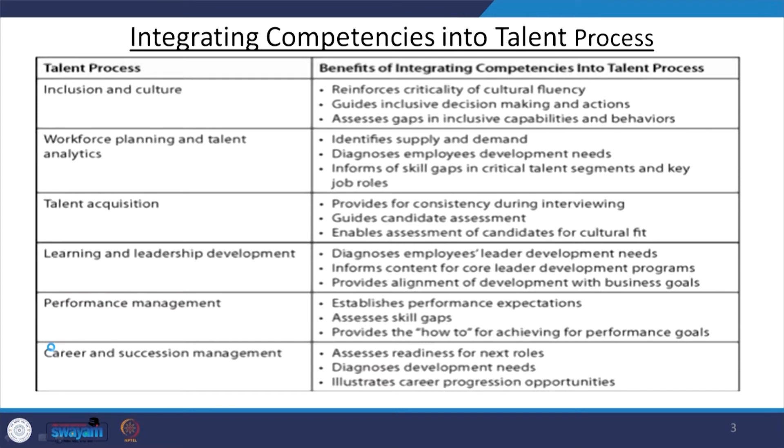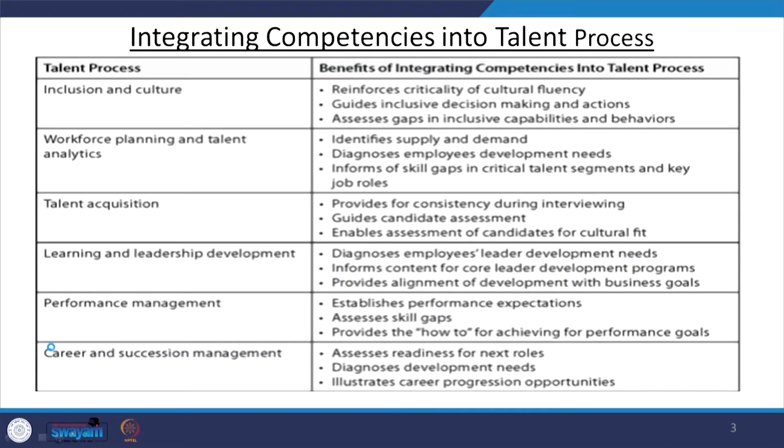In the talent process, the first and foremost aspect is inclusion and culture — how you are able to include your talented employees and build that particular culture. This reinforces the criticality of cultural fluency. Every organization has its own culture. For example, Professor Uday Pariksar mentioned in his book on organizational behavior the OCTAPACE model: openness, confrontation, trust, authenticity, proactiveness, and experimentation.